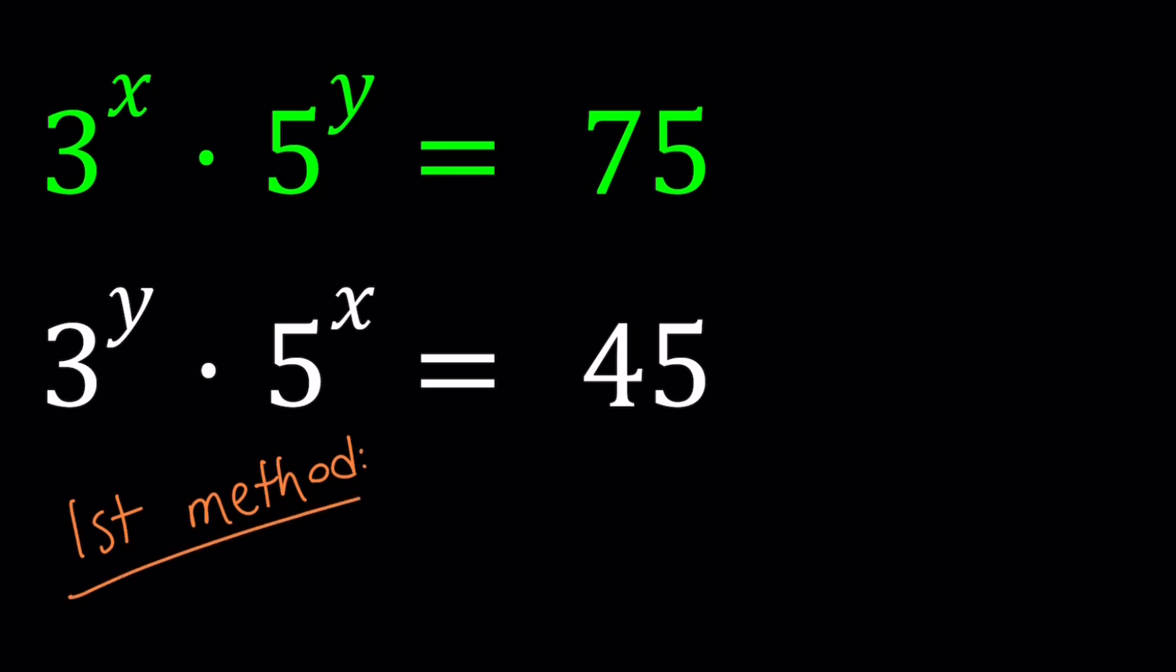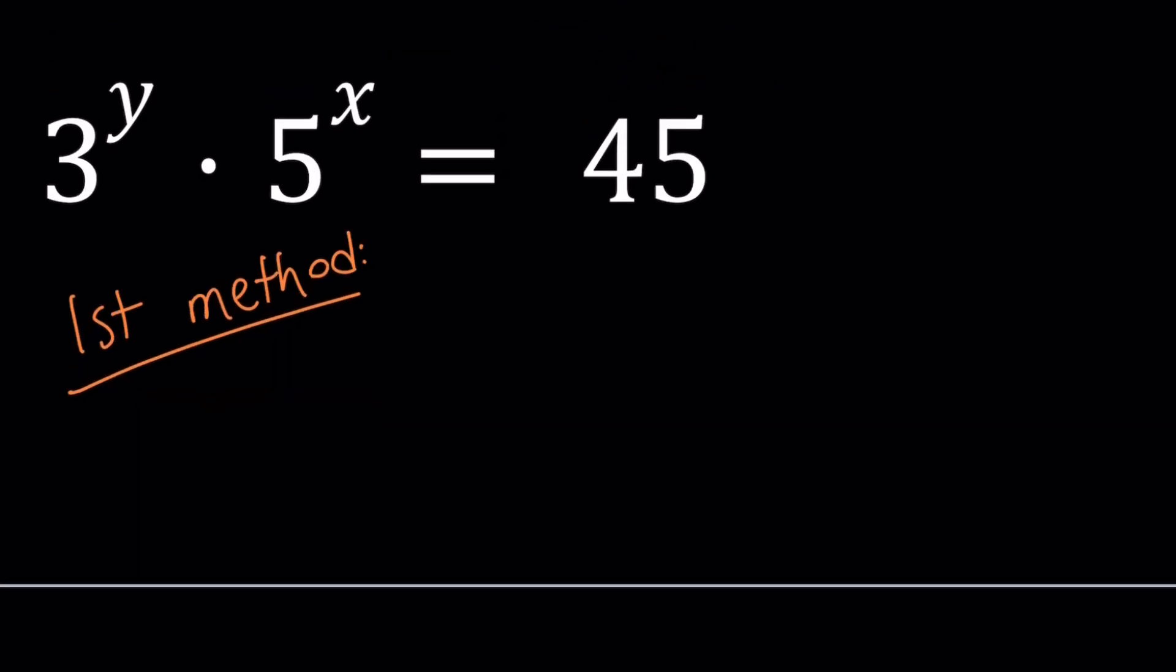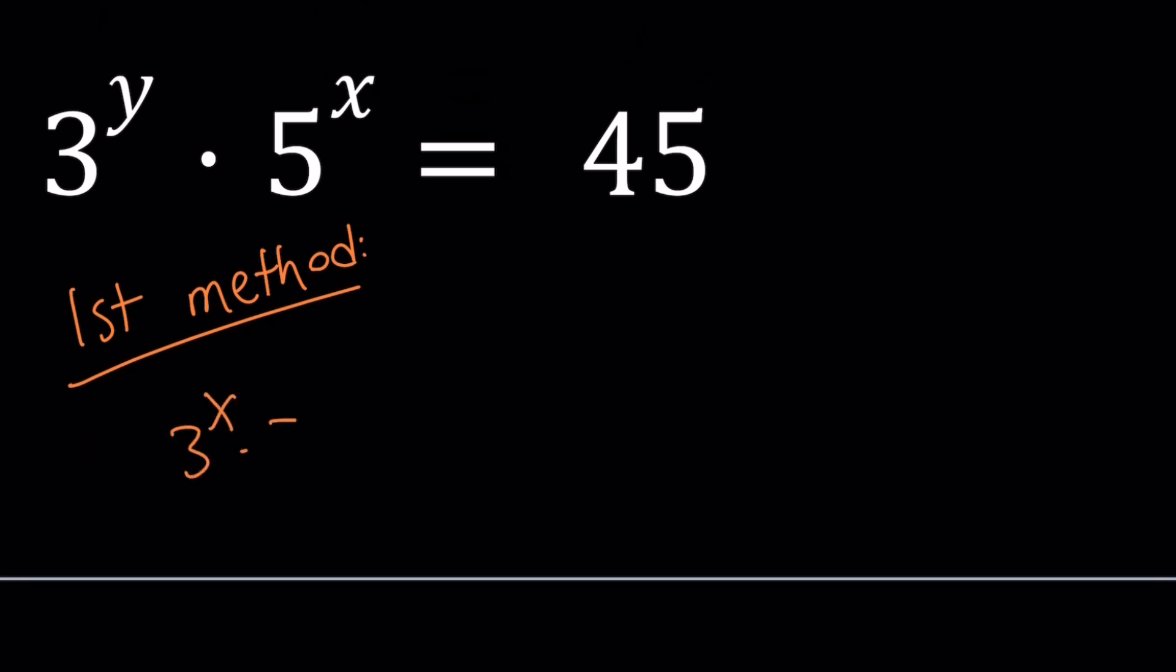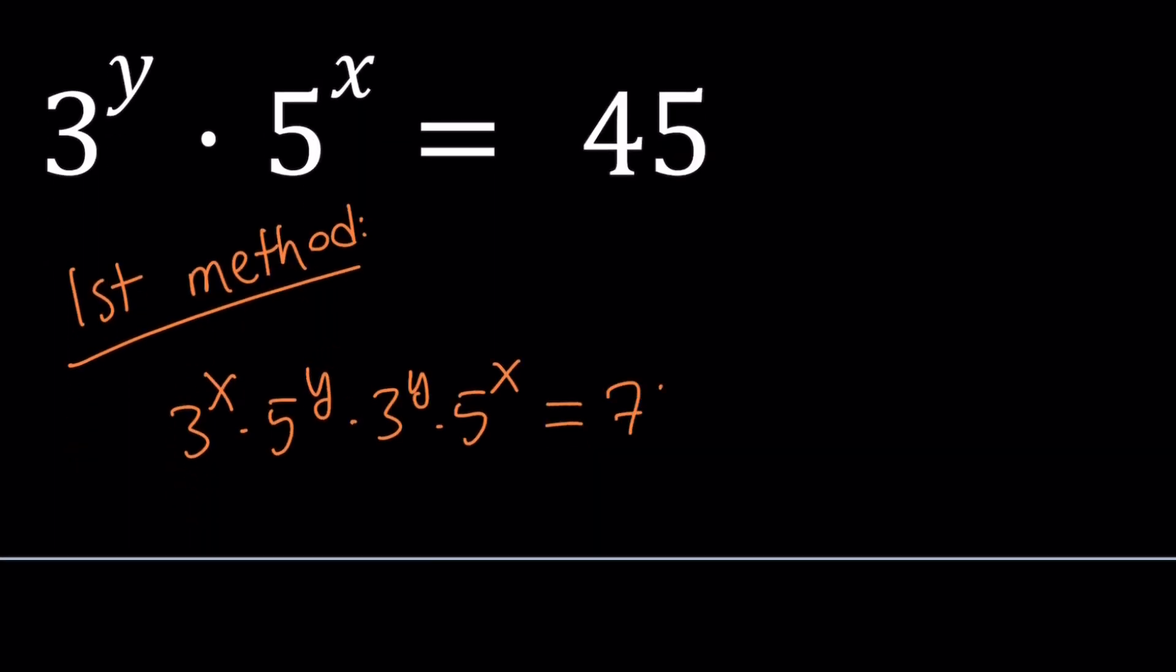So for my first method, I'm going to take these two equations and multiply them together. So I'm going to get 3 to the x times 5 to the y, multiplied by 3 to the y times 5 to the x equals 75 times 45.